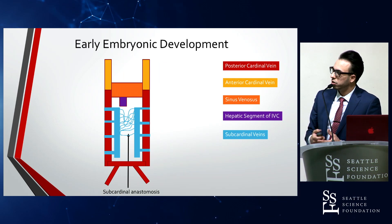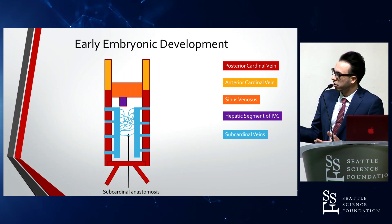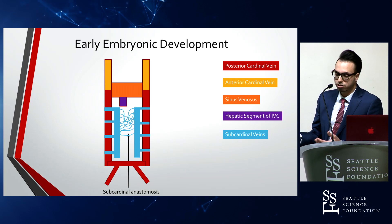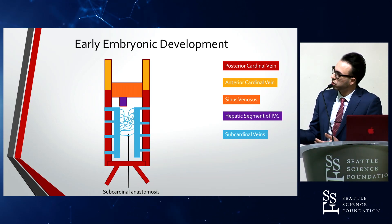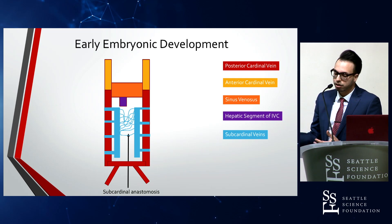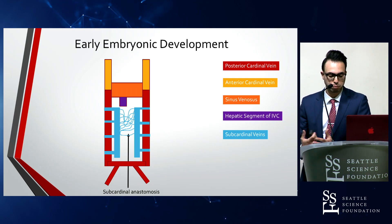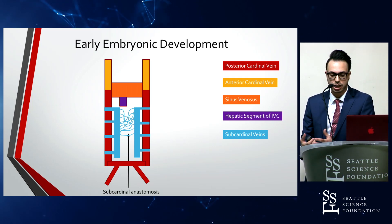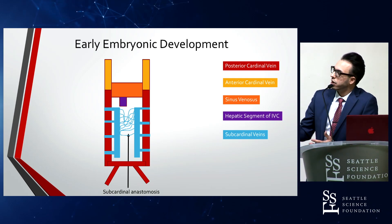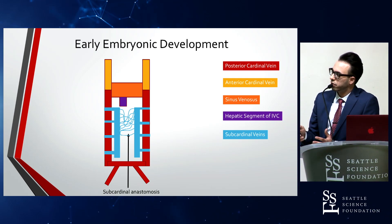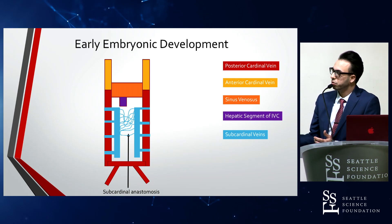A little later on, we see the appearance of the subcardinal veins and their associated anastomosis. The posterior cardinal veins serve the blood supply to the mesonephric kidney — the second kidney in early development. As development progresses through different stages of the kidney and its associated blood supply, you start to lose different veins.